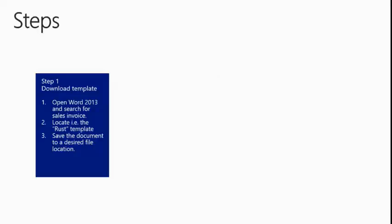Step number one: download the template. We will open Word 2013 and search for sales invoice. We will locate the Rust template and apply this to our report, then save the document so that in the next step we can import it into NAV.